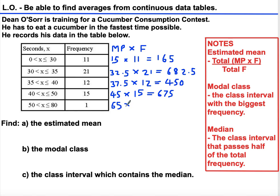Finally, our next midpoint is 65, and we're multiplying by 1. This has allowed us to get an estimate for each class interval of how many seconds the cucumbers were eaten in by Dean O'Sorr.